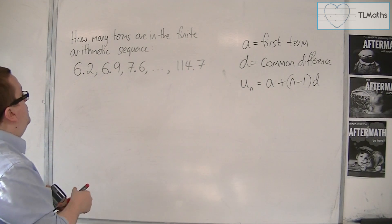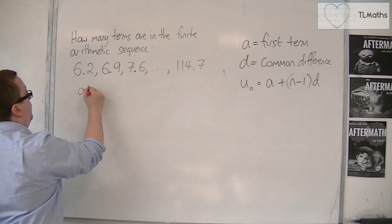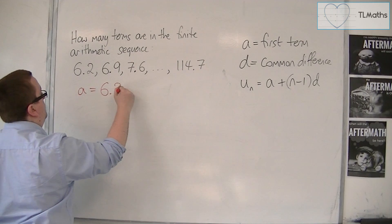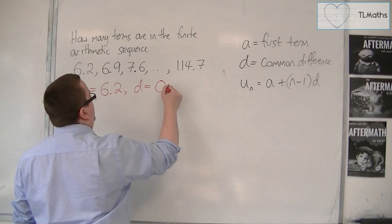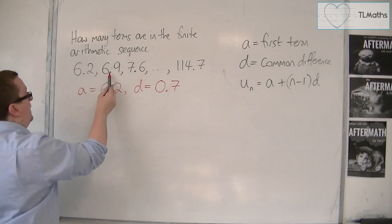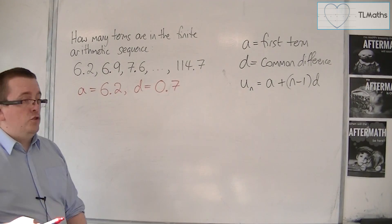I'm going to go through, first of all identifying what A is - so that's 6.2, the first term. The common difference is what I'm adding on each time, and that's 0.7. I can see that between each of the first three terms.